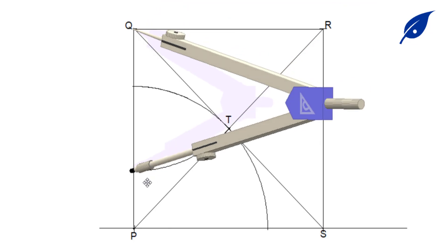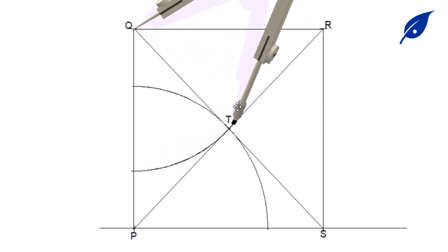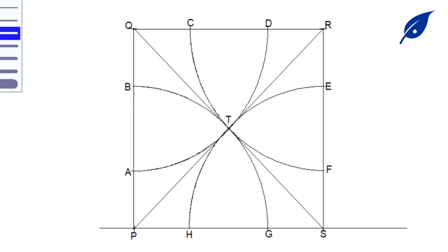We repeat the same process for R and S until we get the required arcs which will be touching the square.